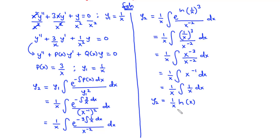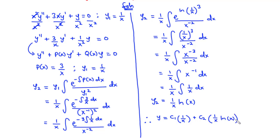So Y2 equals 1/x times ln(x). This is the second solution. Using the principle of superposition, the general solution is y equals c1·(1/x) plus c2·(1/x)·ln(x). We can factor out 1/x, giving y equals (1/x)·[c1 plus c2·ln(x)]. This is the general solution to the given differential equation.